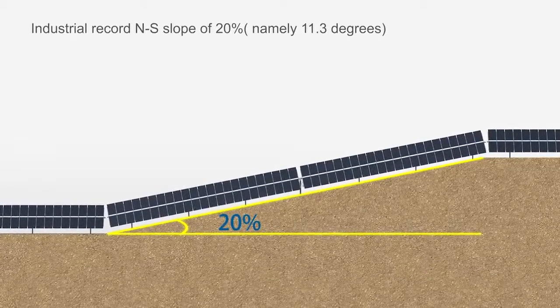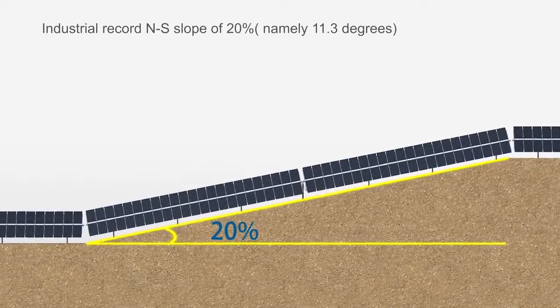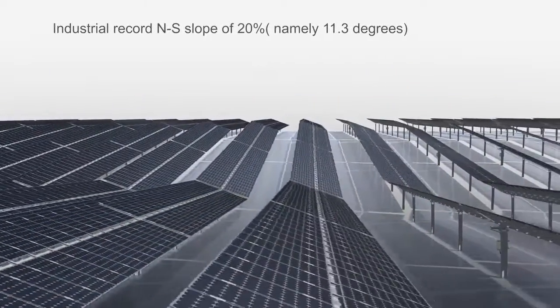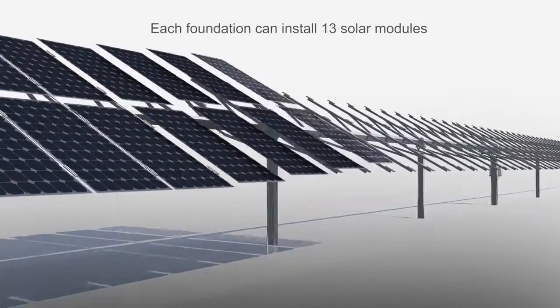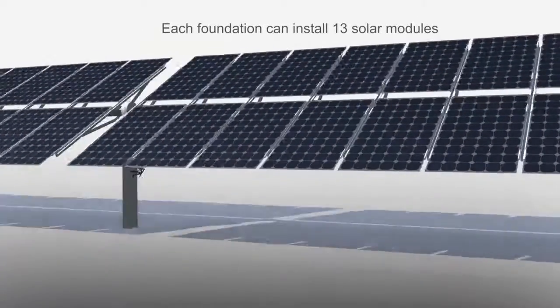SkySmart Tracking System has the industrial record 20% north to south slope and can remarkably reduce the land cost. One SkySmart Tracking System has 7 foundations and can install 90 modules.